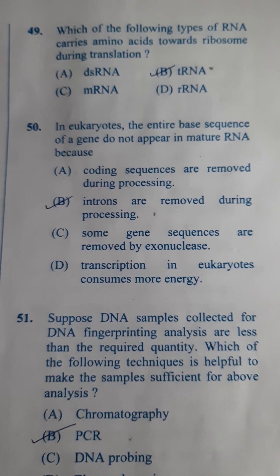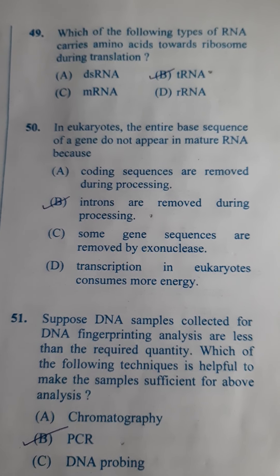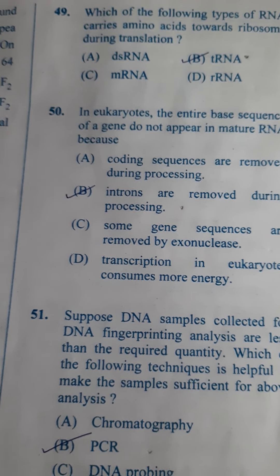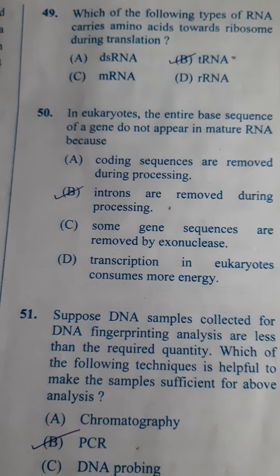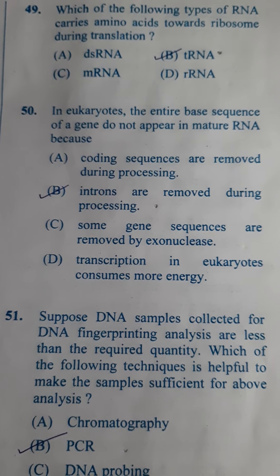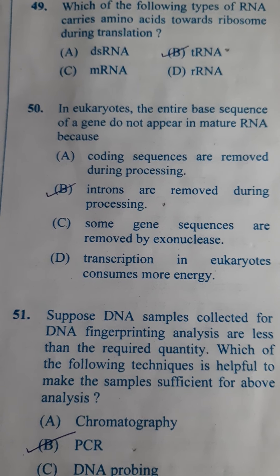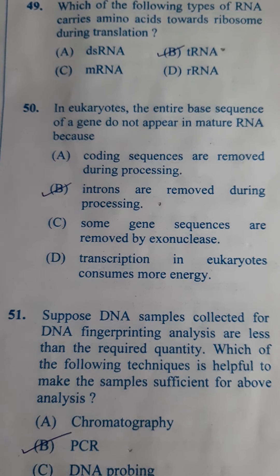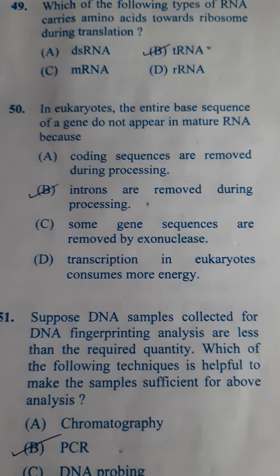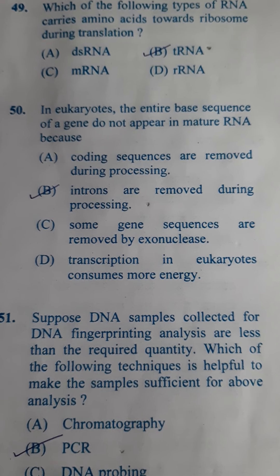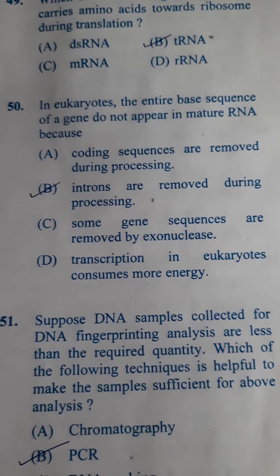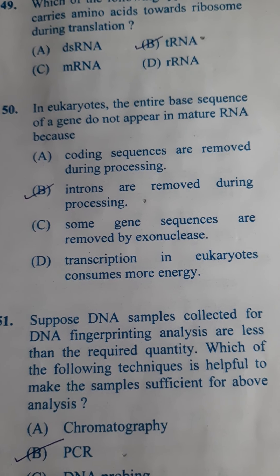Next: In eukaryotes the entire base sequence of a gene does not appear in the mature RNA because — you must have heard about splicing. In eukaryotes, DNA will be having split genes with introns and exons. But RNA will not be having split genes — only structural genes. During splicing, introns are removed and only exons are joined. So here, introns are removed during processing — this is the correct answer. For question number 50, answer is B.